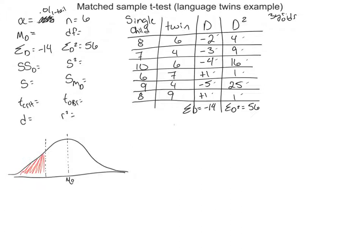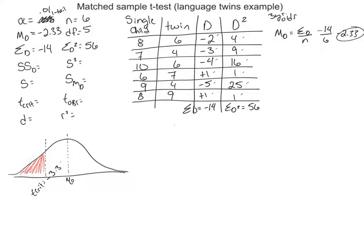Now let's find the mean difference. The mean difference equation is the sum of the differences divided by the sample size, or negative 14 divided by 6, which gives negative 2.33. Our degrees of freedom are 5. Looking up the critical value at alpha 0.01, one-tail, with 5 degrees of freedom gives a t-critical of negative 3.365 — that's the number to beat in our critical region.